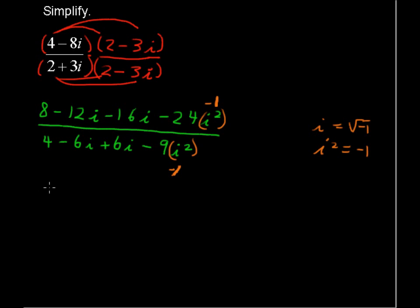Let's rewrite this. Negative 12i and negative 16i gives us negative 28i and then plus 24 all over 4 plus 9.